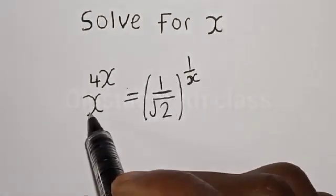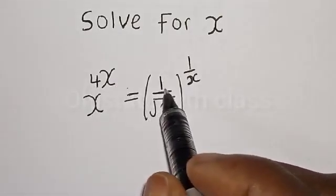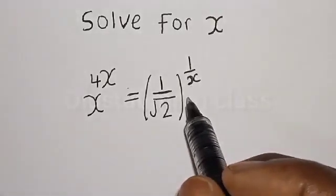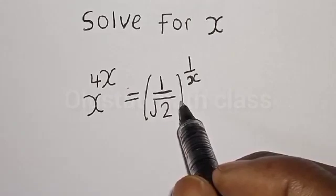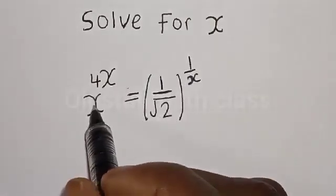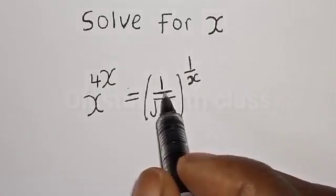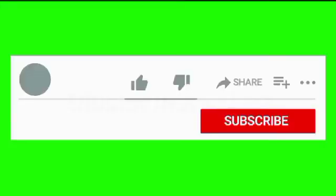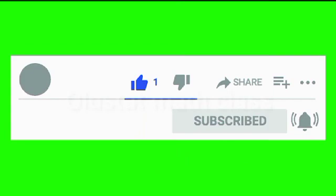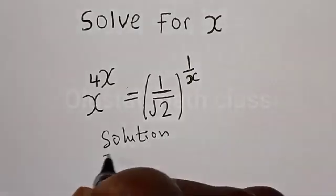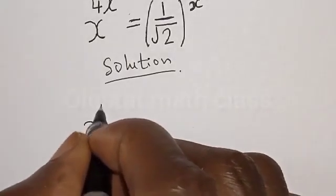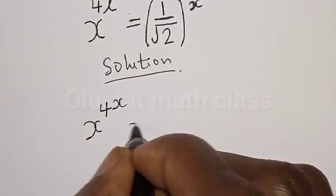Solve for x: x raised to power 4x is equal to 1 divided by square root of 2, raised to power 1 divided by x. Hi everyone, welcome to my class. In this class we want to find the value of x from this given equation. Before we proceed, please don't forget to like, share, comment and subscribe.